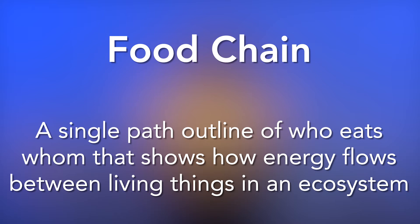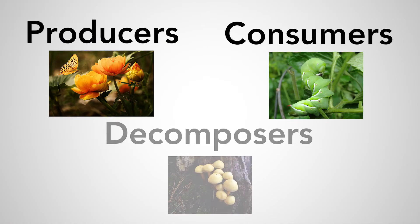Each of those living organisms need food. All things need food. To explain how living organisms get the food they need, scientists write it down in an outline called a food chain. A food chain is an outline of who eats whom, just like the circle of life. A food chain is a single path outline of who eats whom that shows how energy — the ability to do work — flows between living things in an ecosystem. Energy in a food chain comes from the sun. A food chain is divided into three categories: producer, consumer, and decomposer.